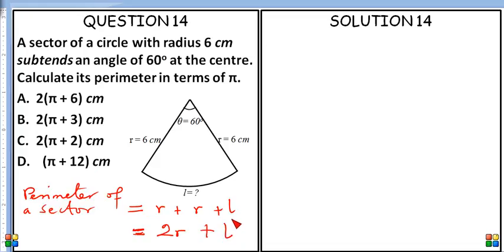Now we have the R. The R is 6 cm, but we have not been given the length. So let's go ahead to find the length of arc, L. The length of arc of a circle L is given by the formula θ over 360 times 2πR.